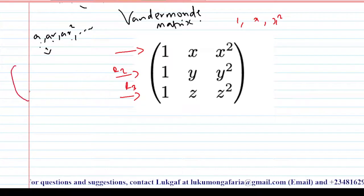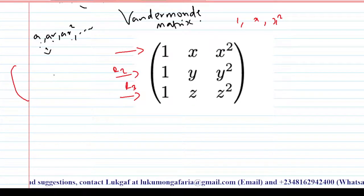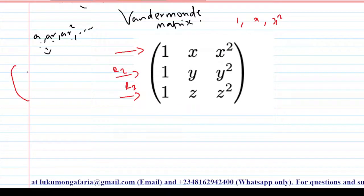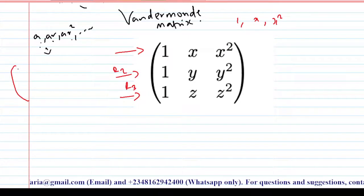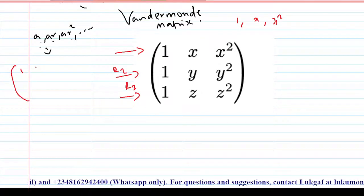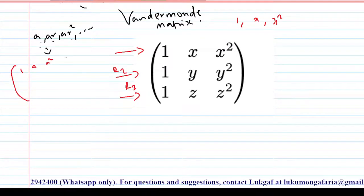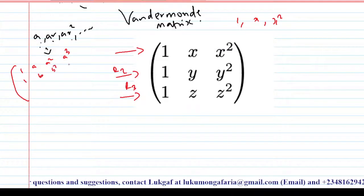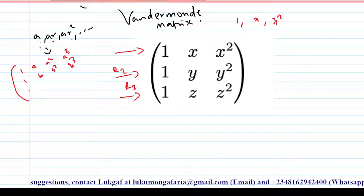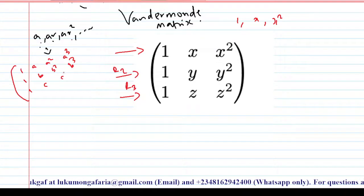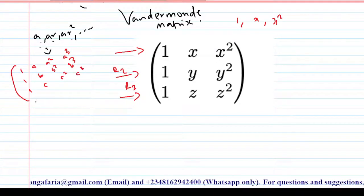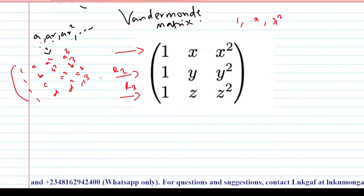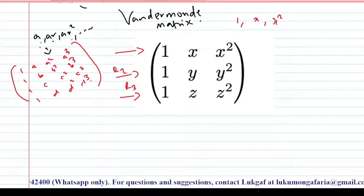You can also have it as another square matrix — for example, in the case of a 4×4 matrix. We have: 1, a, a squared, a cubed; 1, b, b squared, b cubed; 1, c, c squared, c cubed; 1, d, d squared, d cubed. So this is an example of a Vandermonde matrix.